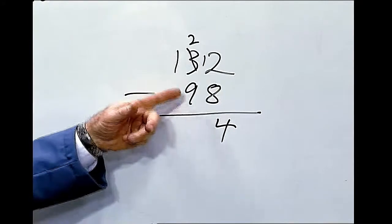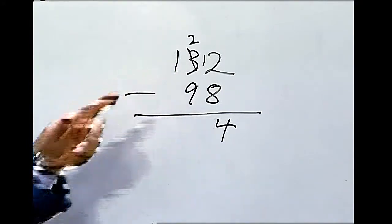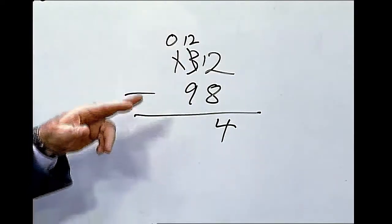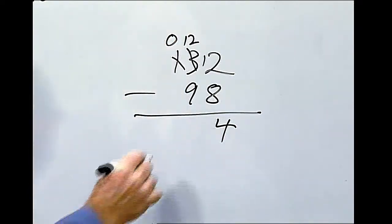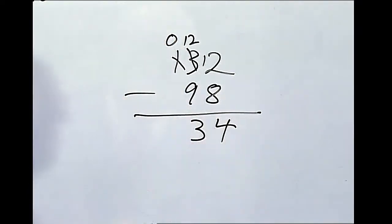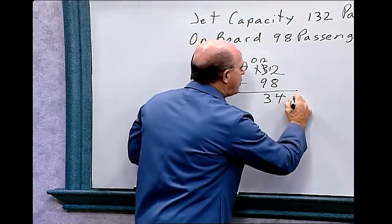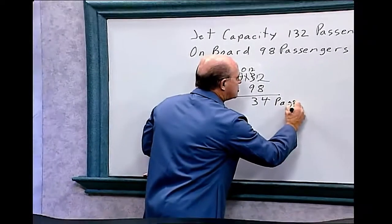And again, we can't subtract the nine from the two. We have to borrow from the hundreds column. Makes this a zero. Now we can deduct 12 minus nine equals three. So the jet could have 34 more passengers.